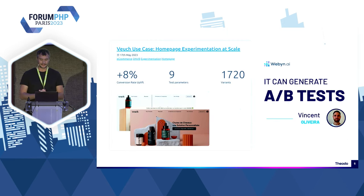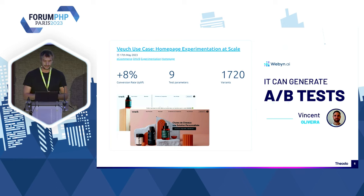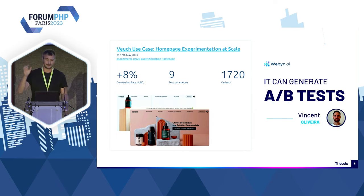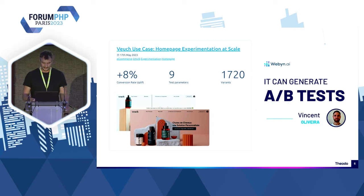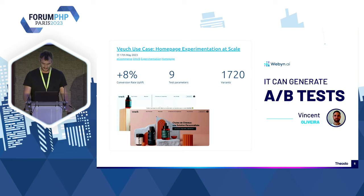Il y a Vincent qui lance une startup pour faire de l'A/B testing avec l'IA. L'IA sélectionne des parties du site — par exemple les titres — et génère des versions alternatives, puis teste celles qui fonctionnent le mieux pour capter l'attention des utilisateurs. Il arrive ainsi, avec un de ses clients, à faire 8% d'augmentation du taux de conversion, ce qui est pas mal si on a du volume.